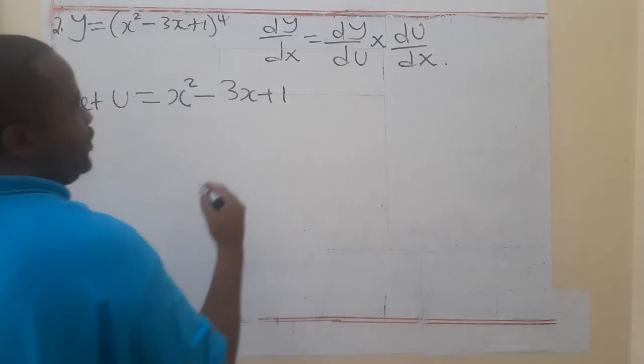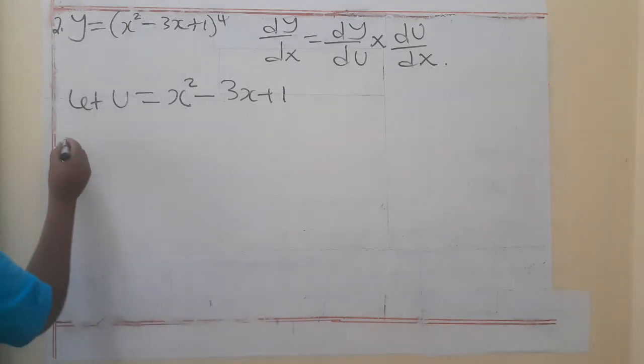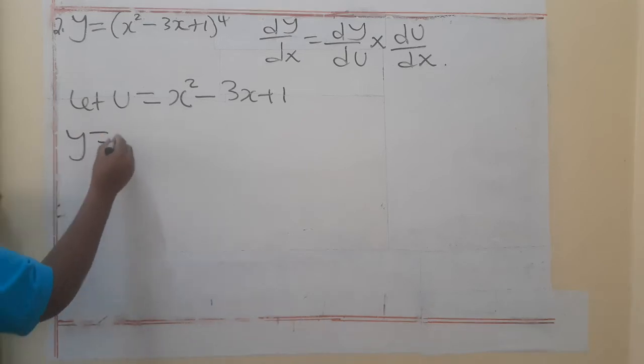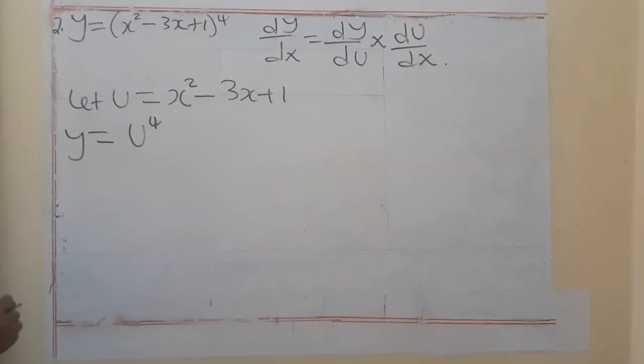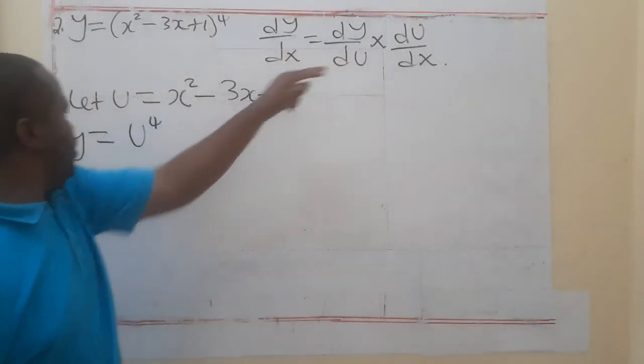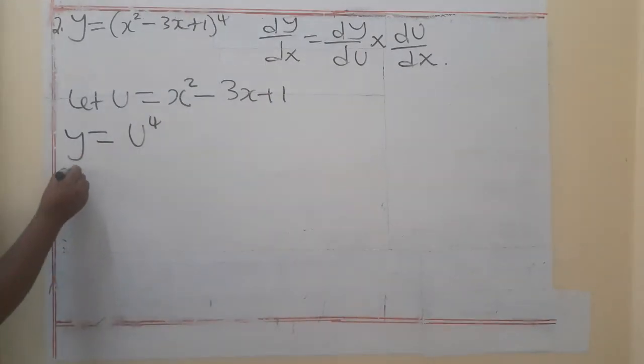Meaning that y now will be equal to, this is u. So, we'll say u to the power 4. So, what we need to do now is to get dy/du. We differentiate one with respect to u.